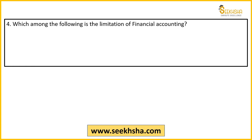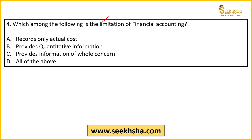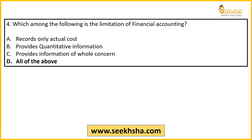Next question पर आ जाओ — financial accounting से related। आपसे पूछा है कि इनमें से कौन सा financial accounting का limitation है। Option A: records only actual cost; B: provides only quantitative information; C: provides information of whole concern; D: all of the above। इनमें से कौन सी financial accounting की कमज़ोरी है? Right answer यहाँ है option D — all of the above — ये तीनों limitations हैं।